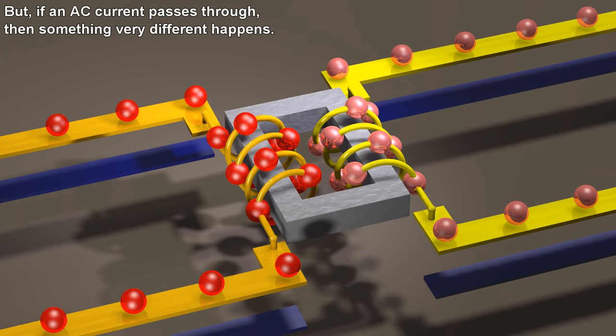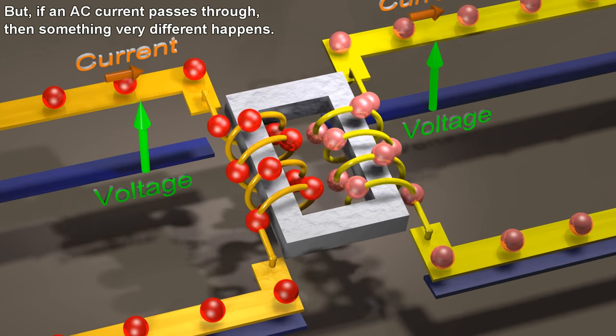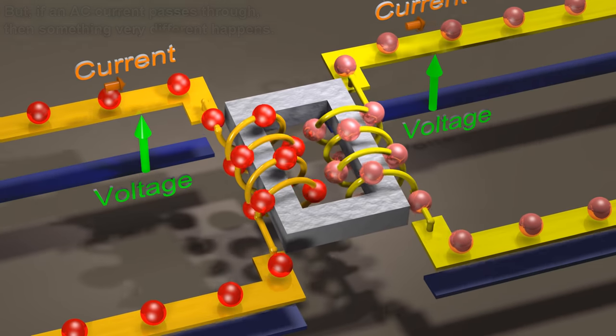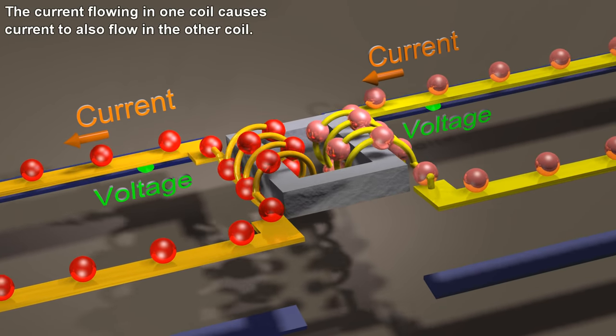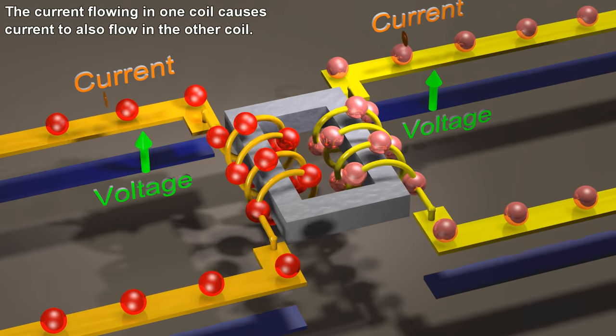But if an AC current passes through, then something very different happens. The current flowing in one coil causes current to also flow in the other coil.